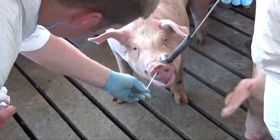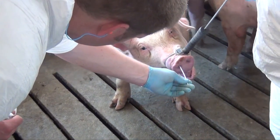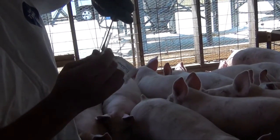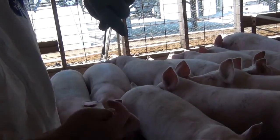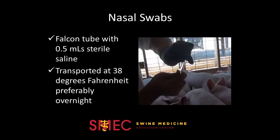Nasal swabs should be collected by inserting the swab into the nostril — you will often hear the pig sneeze or cough once the swab is inserted correctly. You only need to collect a sample from one nostril, then break off the swab into a falcon tube containing 0.5 milliliters of sterile saline. It should then be transported at 36 to 40 degrees Fahrenheit, and like fresh tissue, overnight delivery is preferred, but it can be kept for two to three days.